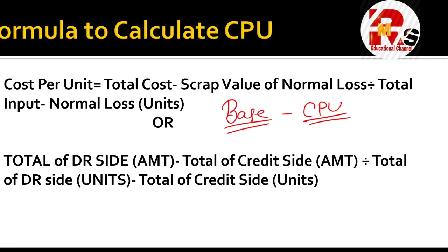The formula for Cost Per Unit is: Total Cost minus Scrap Value of Normal Loss, divided by Total Input minus Normal Loss Units. Many students get confused with this formula, so it is important to understand it clearly to avoid calculation errors.